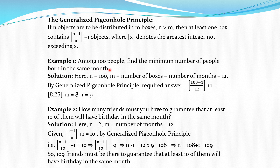Now first, among 100 people, find the minimum number of people born in the same month. As there are 100 persons, by the Pigeon Hole Principle there exist at least 2 persons born in the same month. That is true by Pigeon Hole Principle. But now we want to find the minimum number of people born in the same month, and to find that answer we use the Generalized Pigeon Hole Principle.